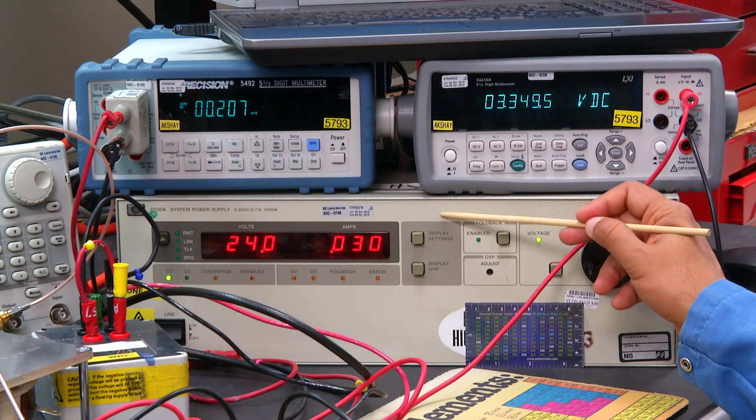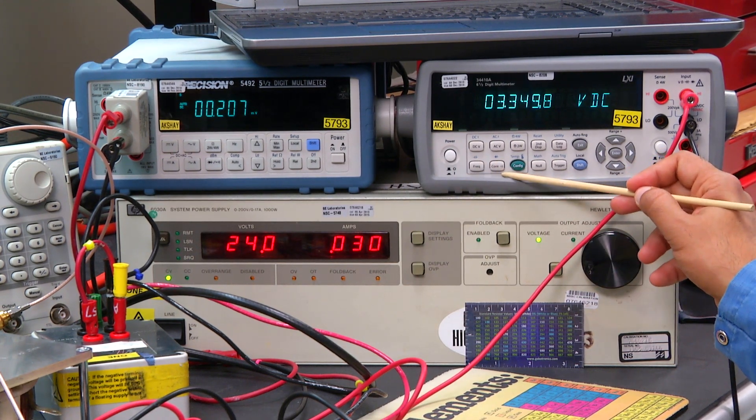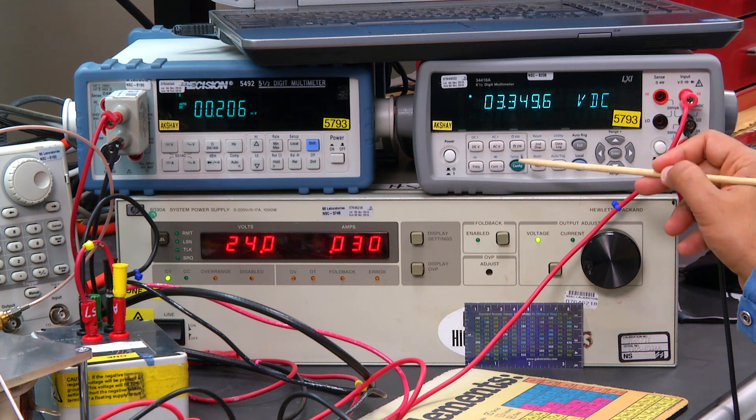This here is the input power supply. It has been set to 24 volts. DMM1 is going to be used to monitor Vout. It is reading 3.3 volts.